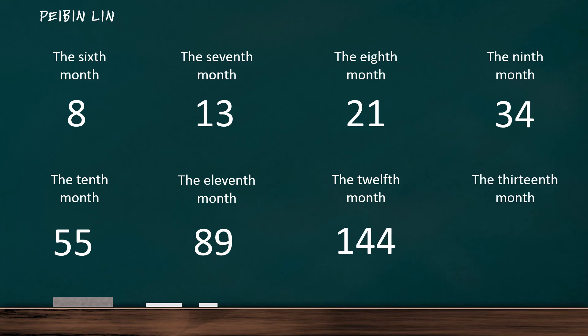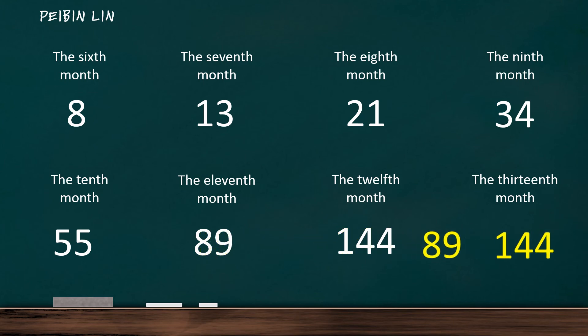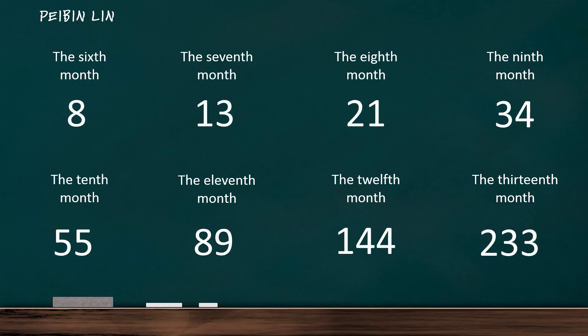So at the beginning of the 13th month, a year from now, the total number of rabbits this guy has is 89 plus 144, which is 233.